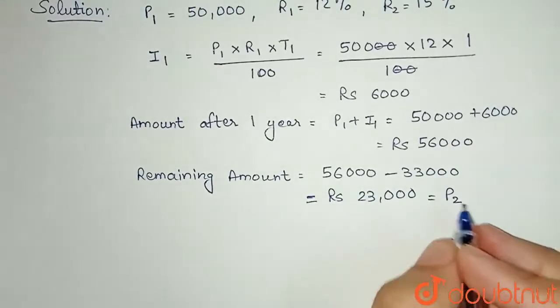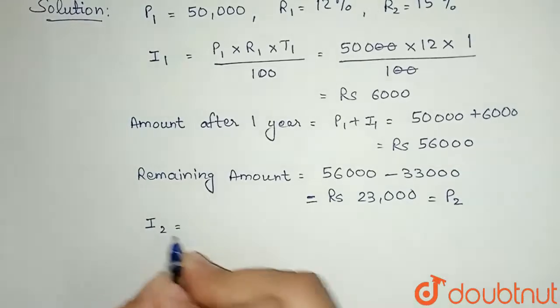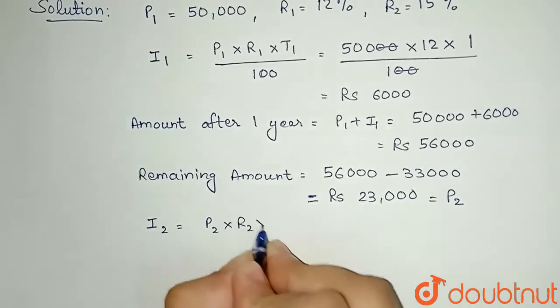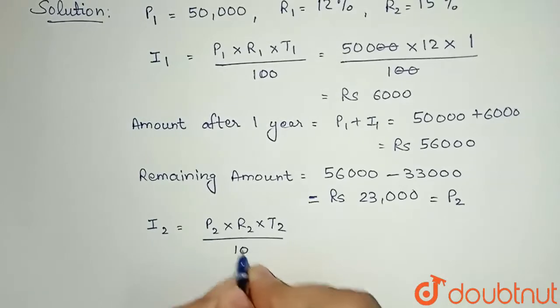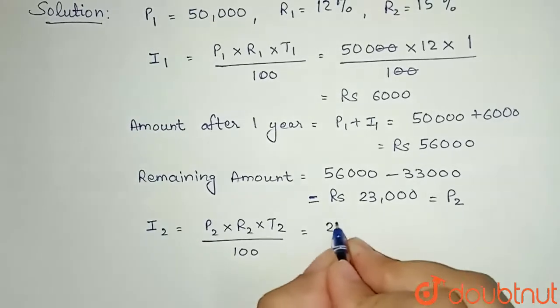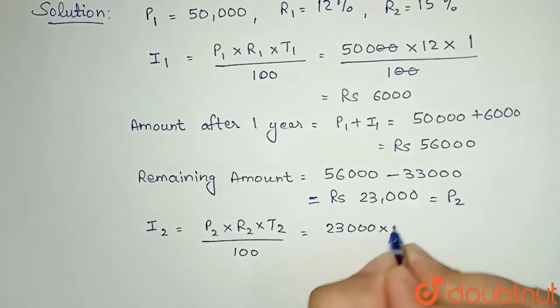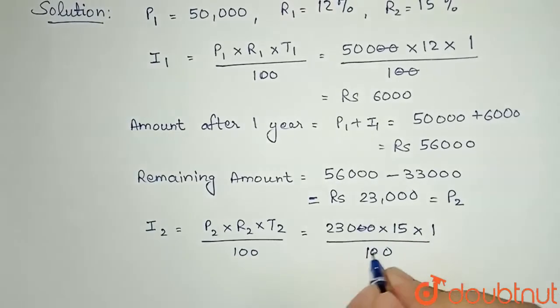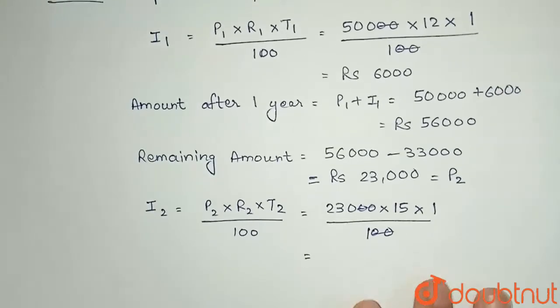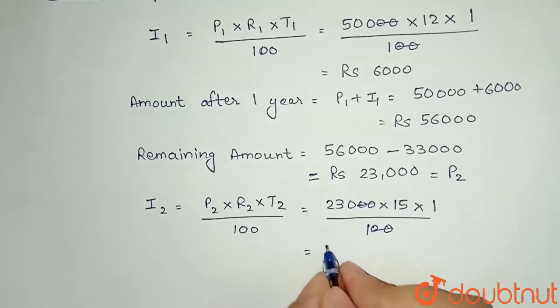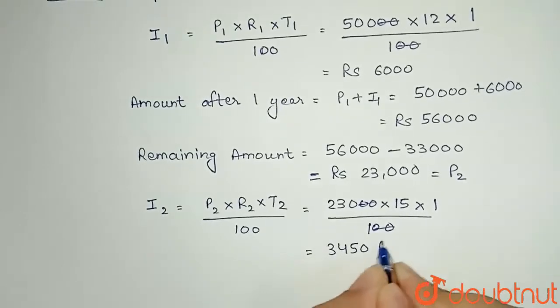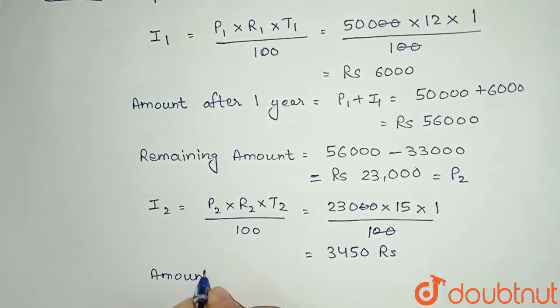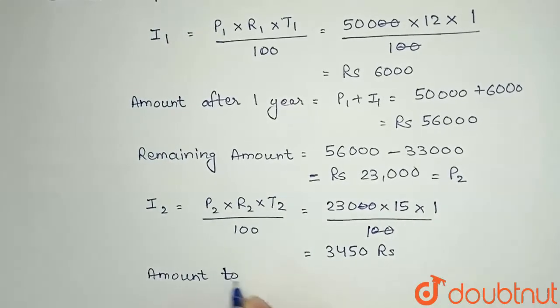Now calculating the interest for the second year: I2 = (P2 × R2 × T2) / 100. P2 is 23,000, R2 is 15, and T2 is 1 year. So (23,000 × 15 × 1) / 100 = Rs 3,450.